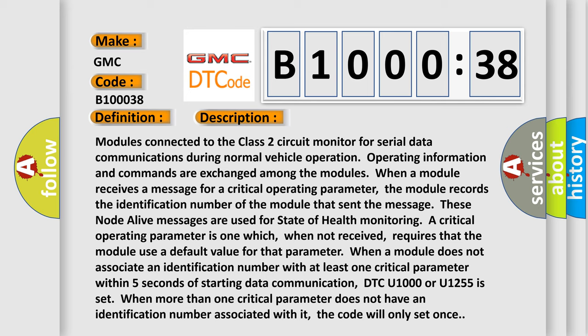Modules connected to the class 2 circuit monitor for serial data communications during normal vehicle operation. Operating information and commands are exchanged among the modules. When a module receives a message for a critical operating parameter, the module records the identification number of the module that sent the message. These node alive messages are used for state of health.